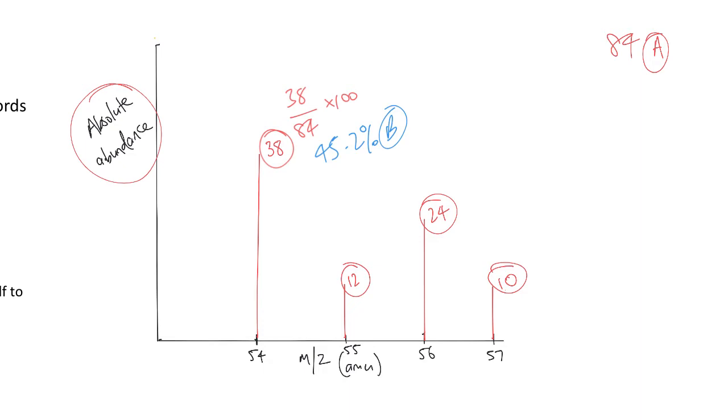So the next one is 12 over 84, or 12 over A times 100. So 12 divided by A times 100 is 14.3%, and I'm going to save that under C. Then the next one is 24 divided by A times 100, which is 28.6%, and I'm going to store that under D. And then the last one, 10 divided by A times 100, equals 11.9%, and I'm going to store that under E.